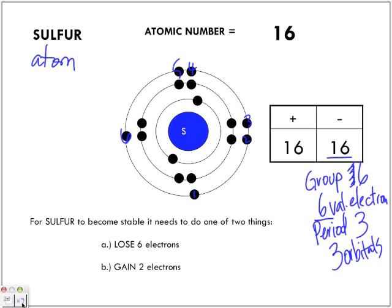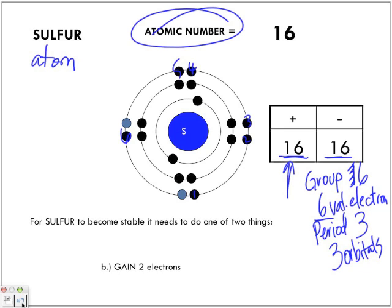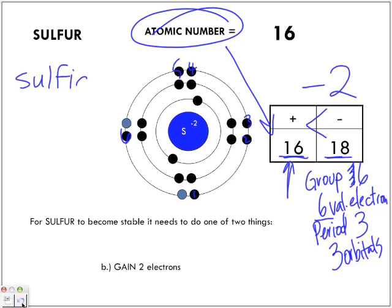Most likely to happen — remember, sulfur is on the non-metal side. Non-metals have a tendency to gain electrons, so it's more likely to gain two electrons. Now this count is no longer the same — it's still 16 protons, because that never changes, but we've got 18 electrons. We've got less protons than electrons — two less. Which means the charge for sulfur is negative two. So now it's no longer a sulfur atom — it is a sulfur ion, or a sulfide. The -IDE represents ion.